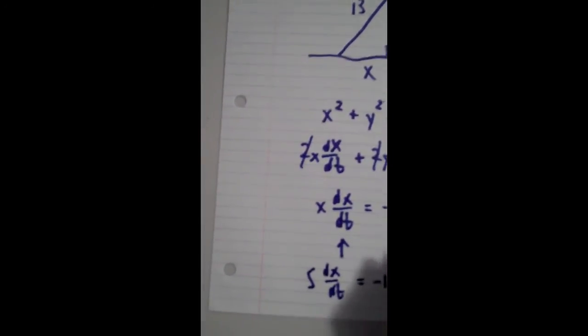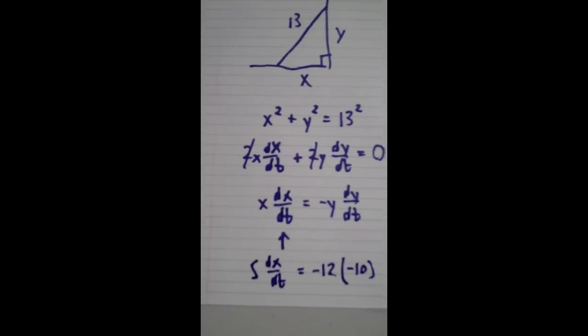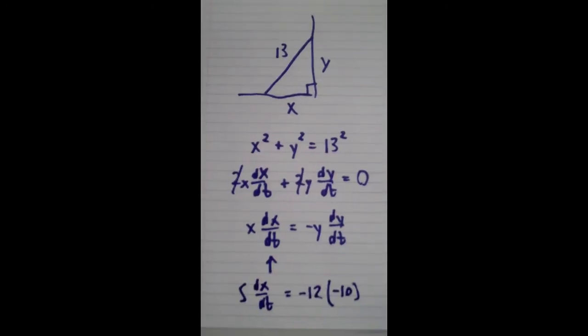So we got negative 12. And dy/dt is actually negative 10 because the ladder is falling, which means that y is decreasing.